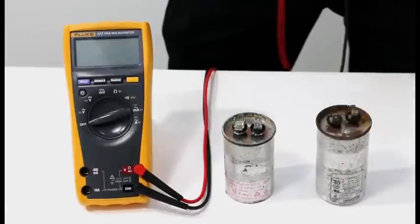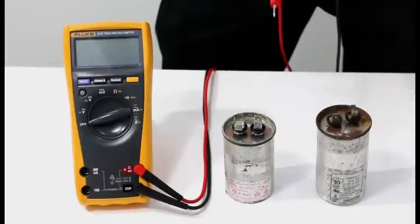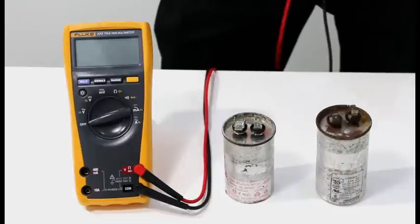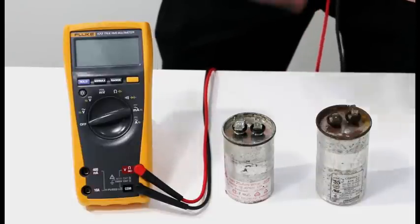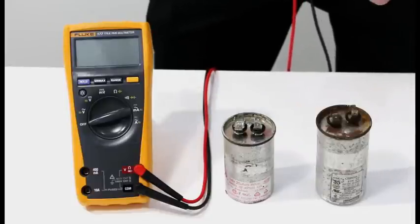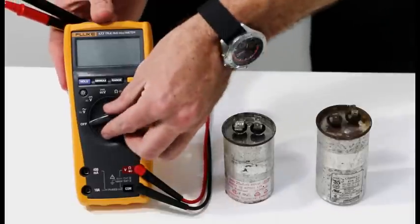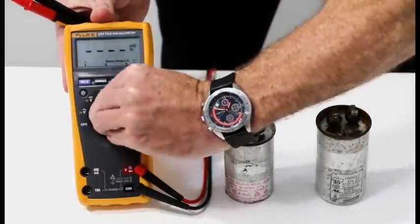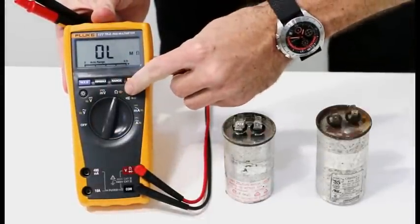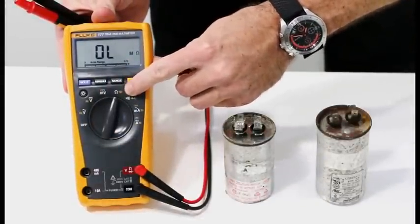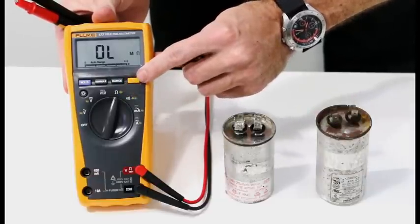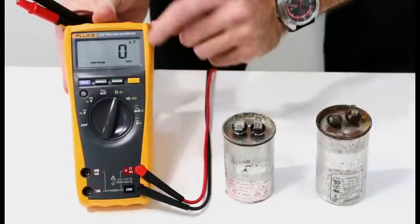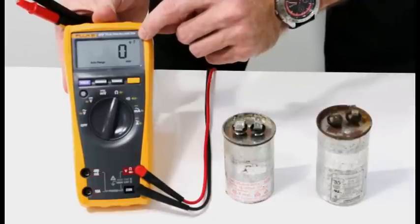We are now going to measure capacitance. I have two capacitors here, one is 25 microfarad and one is 35 microfarad. I know for a fact that one of these has failed. The first thing that we need to do is turn our rotary dial over to our resistance and capacitance function. The capacitance function is highlighted in yellow. I need to press the function key so that it is now moved over to the capacitance function.